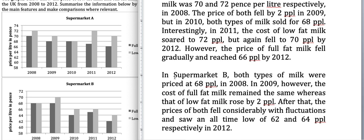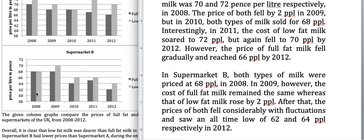In Supermarket B, both types of milk were priced at 68 ppl in 2008. In 2009, the cost of full-fat milk remained the same whereas low-fat milk rose by 2 ppl. After that, the prices of both fell considerably with fluctuations — you can see those fluctuations on the graph — and saw an all-time low of 62 and 64 ppl respectively by 2012.